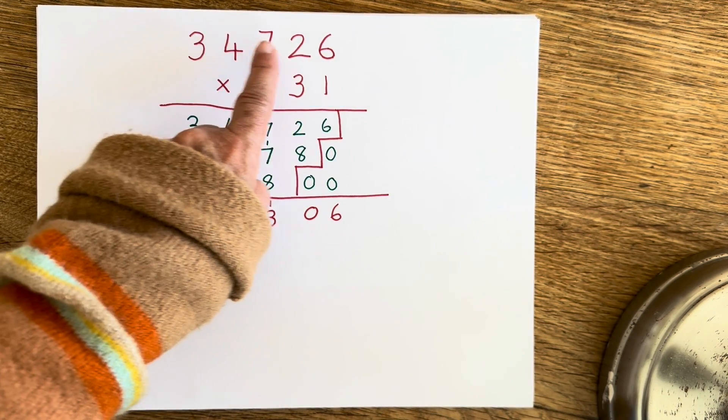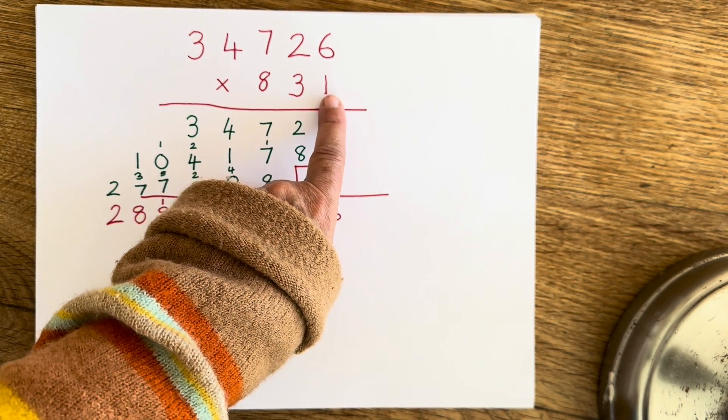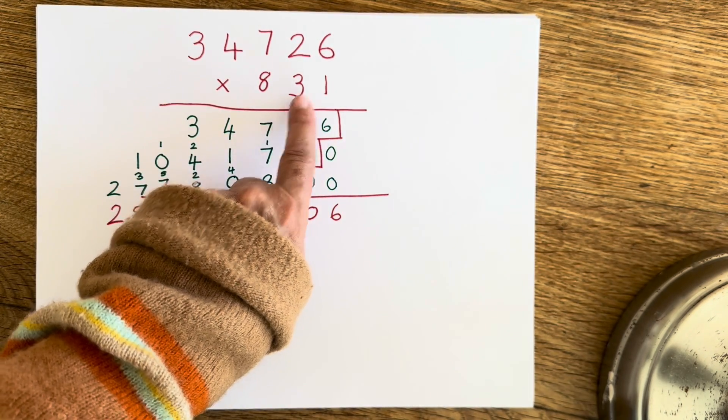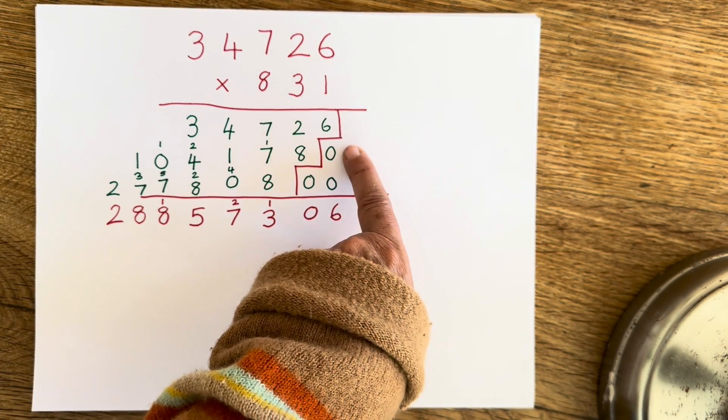And I've done that by first multiplying the one by the top number, then the three by the top number, and then the eight by the top number. And those are these three rows here that I have.